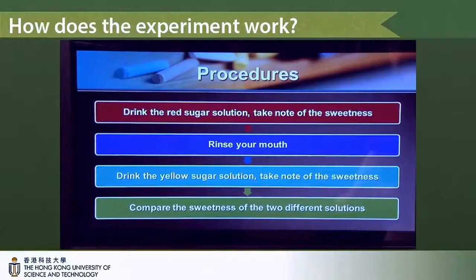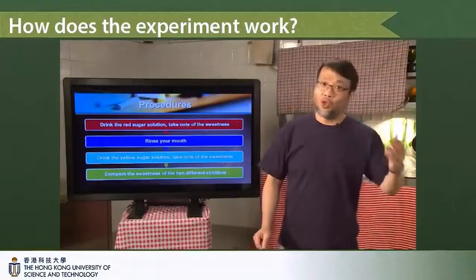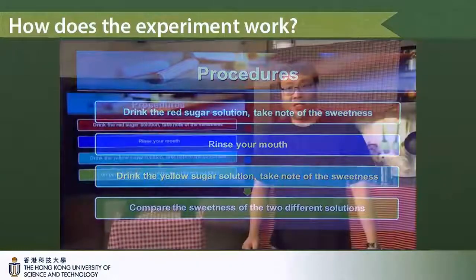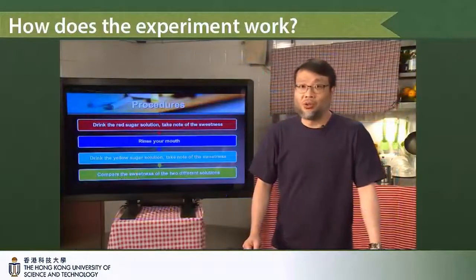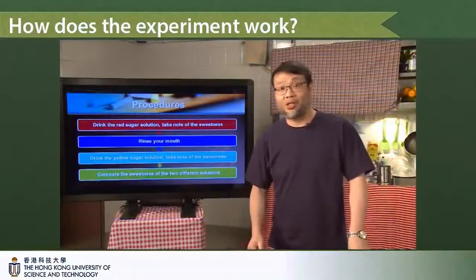And again ask them to rank or take note of the sweetness of it. And afterwards, what you ask them to do is to compare the red solution versus the yellow solution. And from their interpretation of the sweetness of the solution, it's going to tell you how the color of a particular solution is going to change the perception of the sweetness.